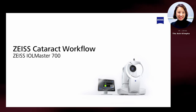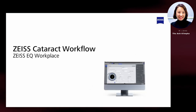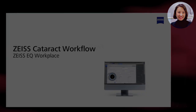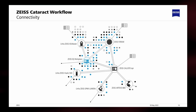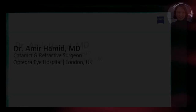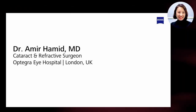The IOL Master is connected to the EQ Workplace, the planning workspace. The EQ Workplace is a planning tool where all the measured data comes together. The clinical workflow can be optimized by having access to data anywhere and anytime. It is an assistant in surgery planning and IOL calculation, as well as ordering. All the planned data can be transferred to the Zeiss ophthalmic microscope afterwards. The EQ Workplace is the connection point of the workflow.